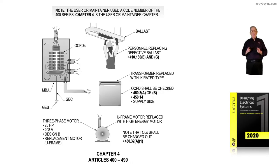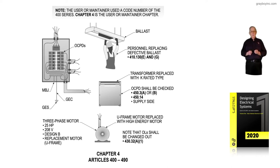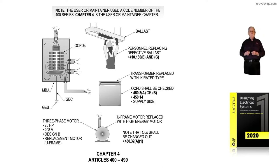Now we're getting into Chapter 4, which is mainly Articles 400 through 490. We have previously looked at Chapter 1, the 100 series; Chapter 2, the 200 series; Chapter 3, the 300 series. Now we're reviewing Chapter 4, the 400 series. Notice that motors fall in Chapter 4, Article 430; air conditioners and compressors fall in Article 440; transformers fall in Article 450, and so forth.